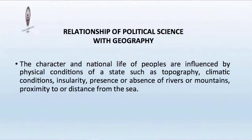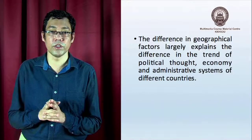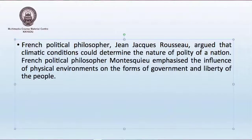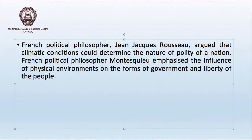Now let us examine the relationship of political science with geography. Political science has some relation with geography. The character and national life of peoples are influenced by physical conditions of a state such as topography, climatic conditions, insularity, presence or absence of rivers or mountains, and proximity to or distance from the sea. These geographical factors largely explain the difference in the trend of political thought, economy and administrative systems of different countries. French political philosopher Rousseau argued that climatic conditions could determine the nature and quality of a nation. Montesquieu emphasized the influence of physical environments on the forms of government and liberty of the people.